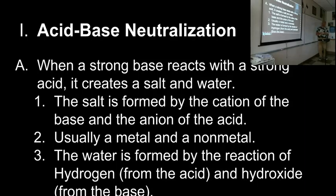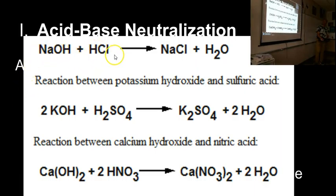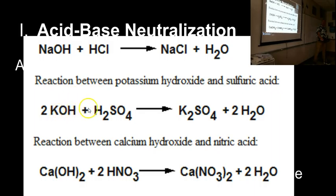Here is an example. Sodium hydroxide plus hydrochloric acid gives you salt and water. The reaction between potassium hydroxide and sulfuric acid is the same: potassium forms the metal part of the salt, sulfate forms the negative part, and the hydrogens and hydroxides get together to form water — giving you potassium sulfate, which is a salt. So again, salt water — not table salt and water, but another kind of salt and water.